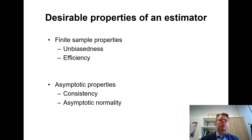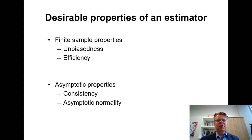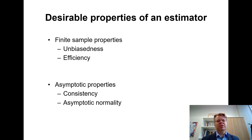I will mainly focus on the finite sample properties of unbiasedness and efficiency of the OLS estimator. Then at a relatively superficial level I'll explain what consistency means in this context — it's different from logical consistency — and the quite important property of asymptotic normality. I will formally prove the unbiasedness of the OLS estimator in the single linear regression case, but I do not go into the technical proofs of all properties, as those are beyond the scope of this course.